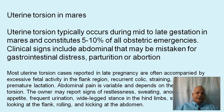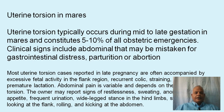Uterine torsion in mares typically occurs during mid to late gestation and constitutes 5 to 10% of all obstetric emergencies. Clinical signs include abdominal colic that may be mistaken for gastrointestinal distress, parturition, or abortion. Most uterine torsion cases in late pregnancies are accompanied by excessive fetal activity in the flank region, recurrent colic, straining, and premature lactation.